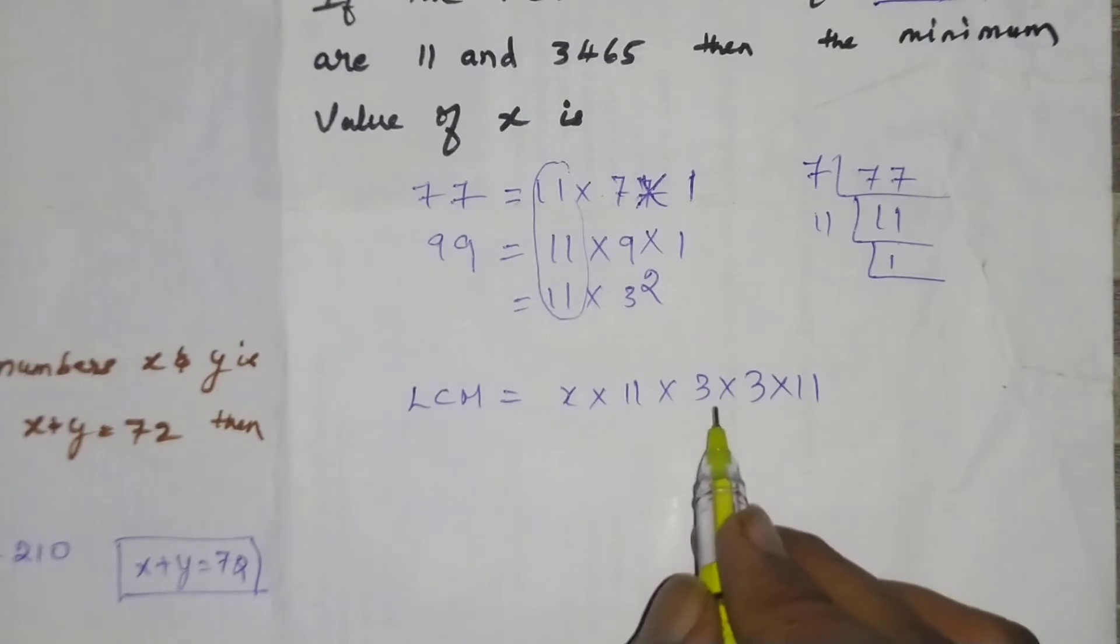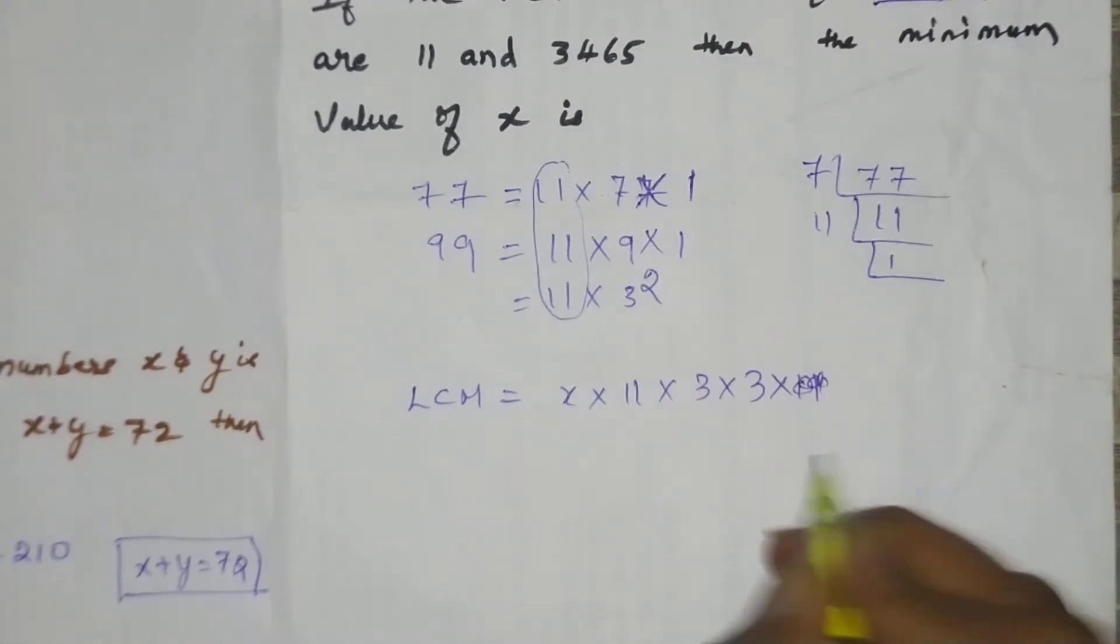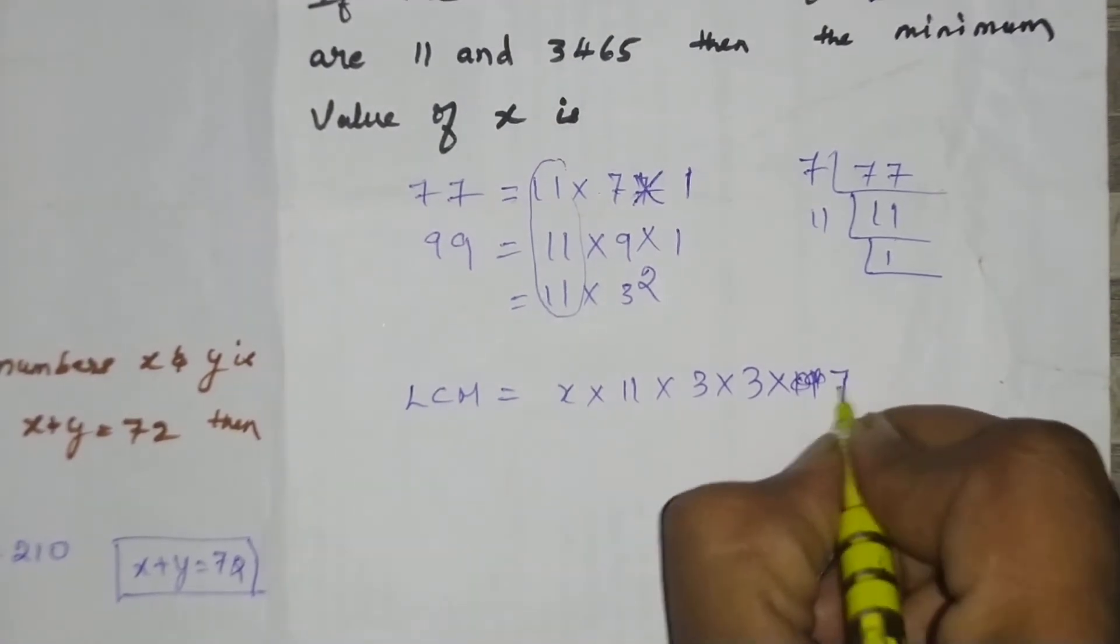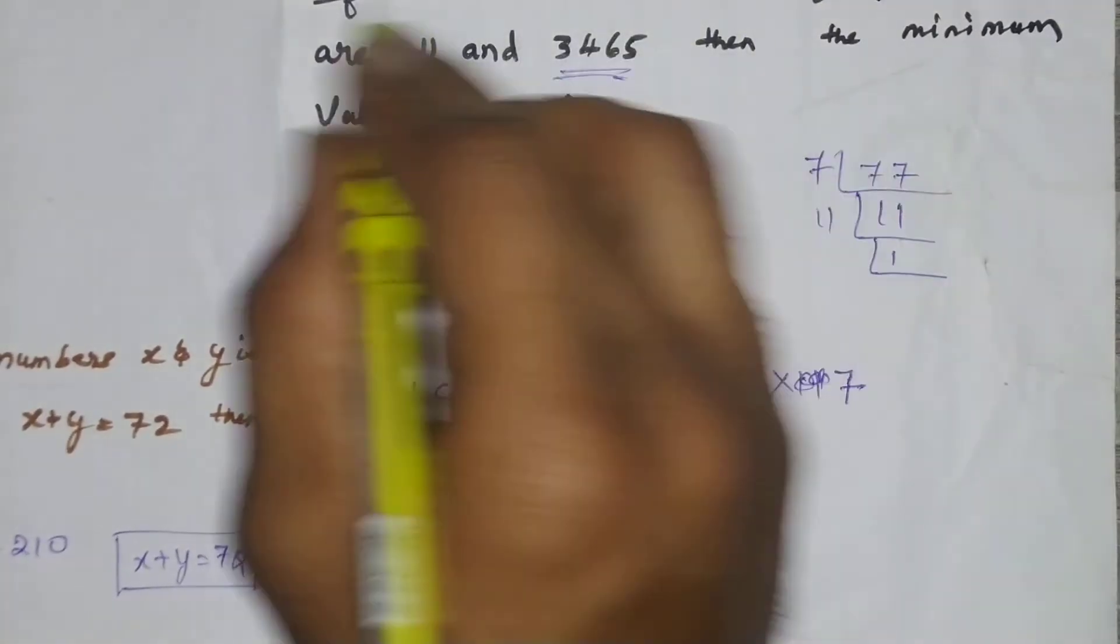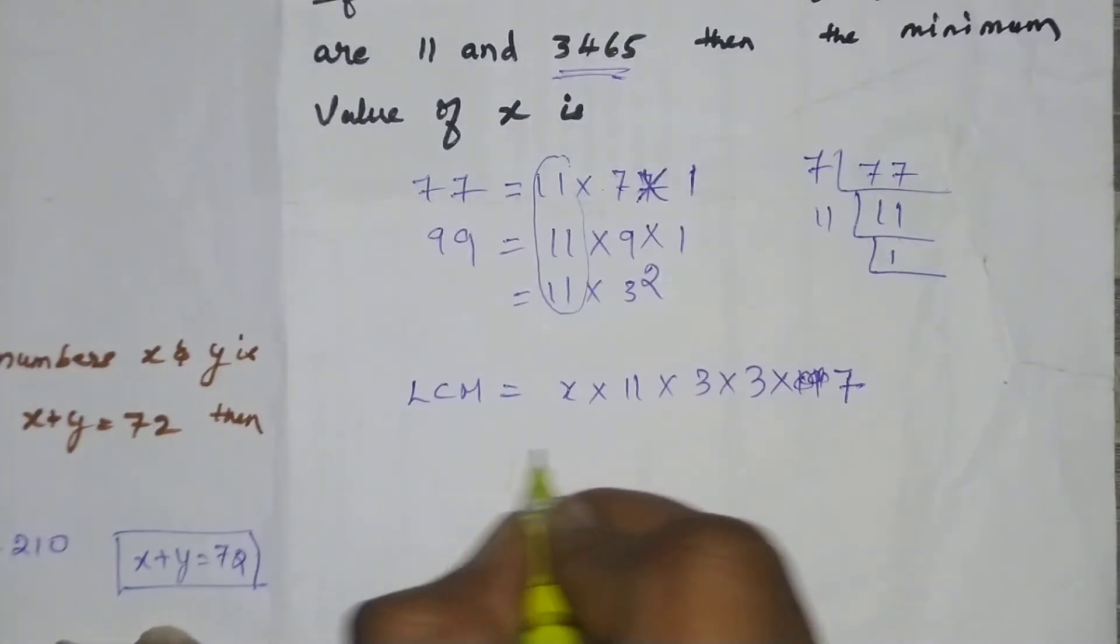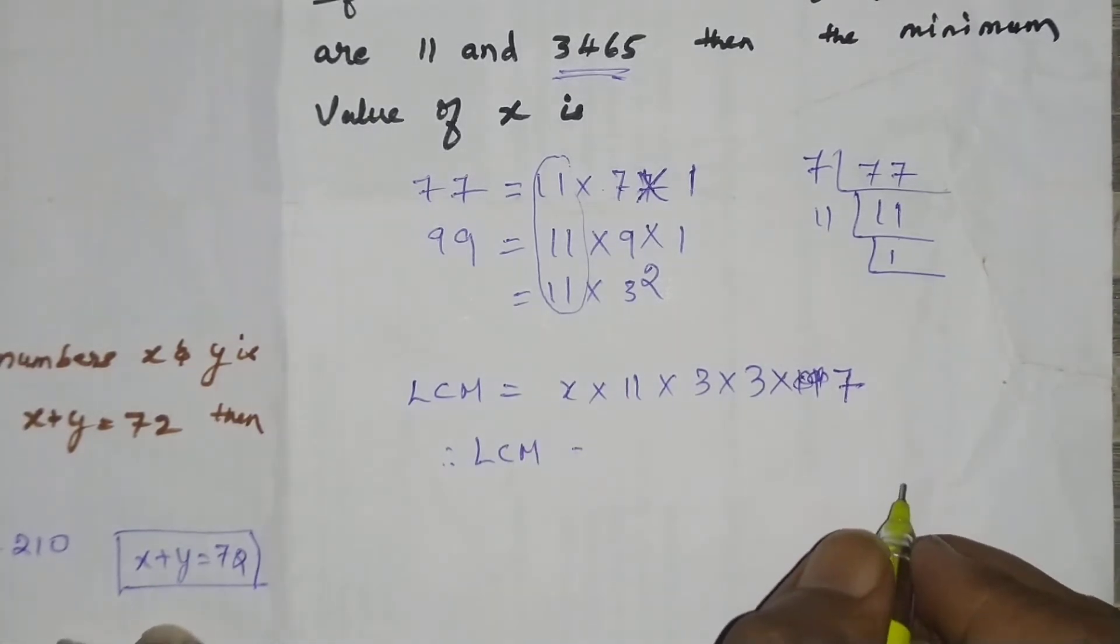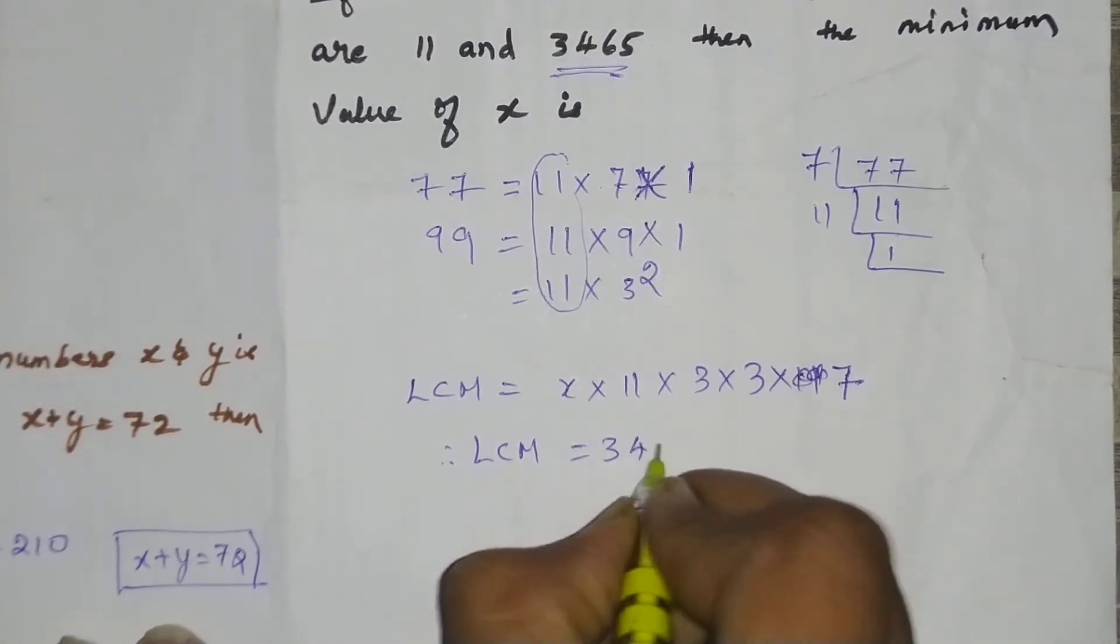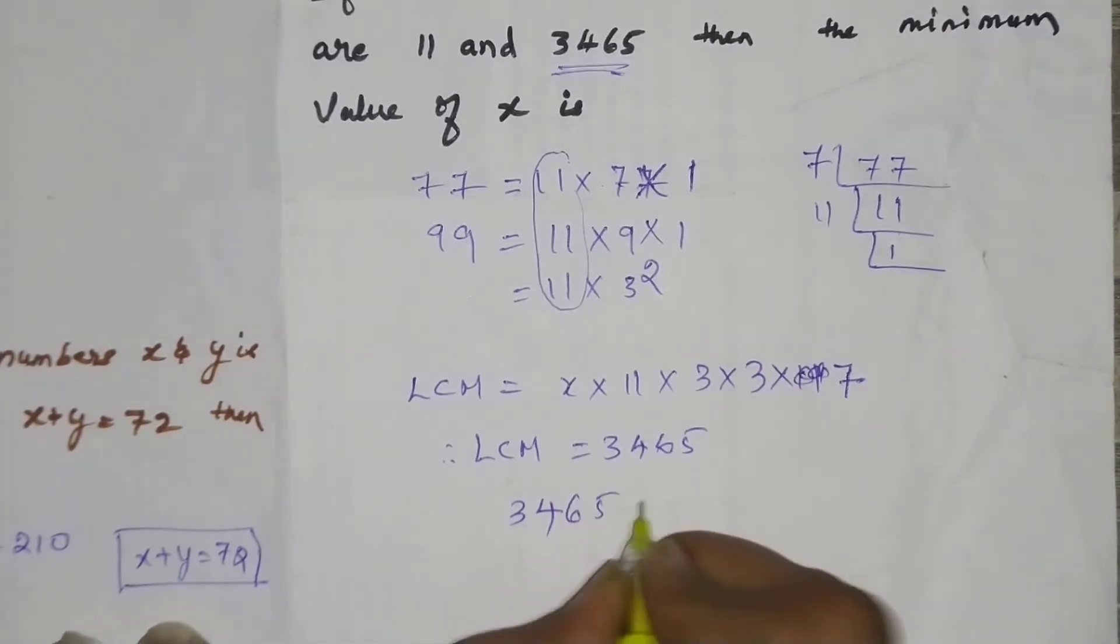LCM equals 7 times 11 times 3 times 3 times x, which equals the given LCM of 3465.